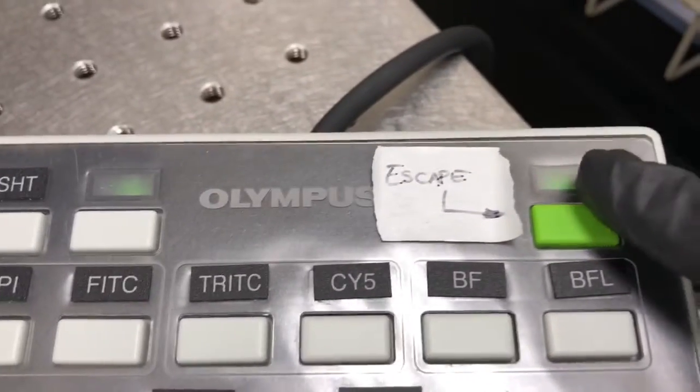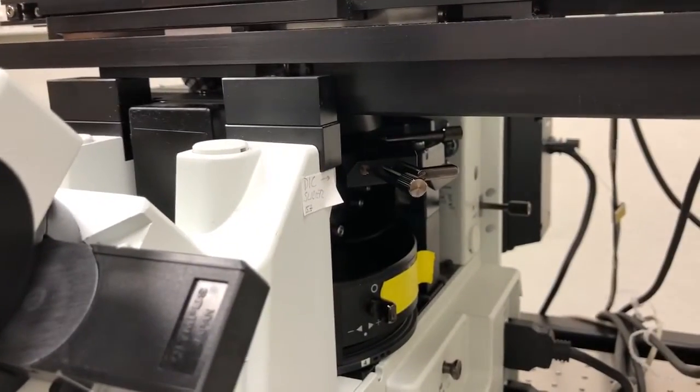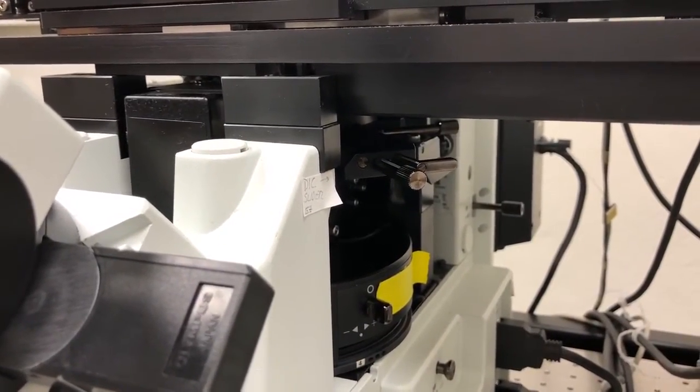We can also engage the escape by pressing this green button here. If we press it again, the objective moves down. If we press it again, you'll see that the whole assembly goes back up.